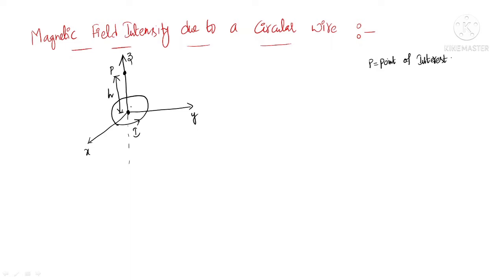This is the center of the circular wire, or origin. The coordinates of point P are x=0, y=0, and z=h. I am interested to find the field intensity at this point due to the current-carrying wire placed in the xy plane with its center at the origin. The radius of this circular wire is rho.